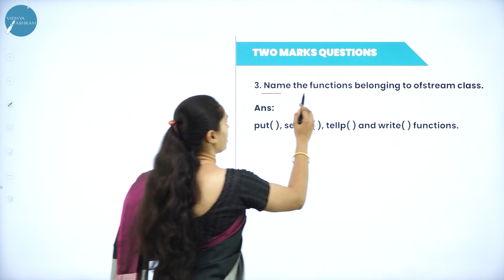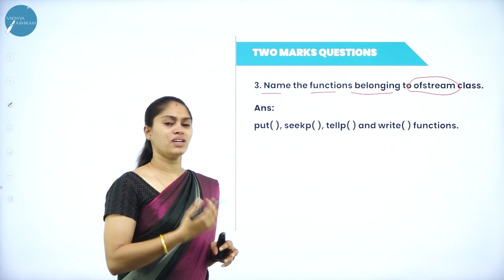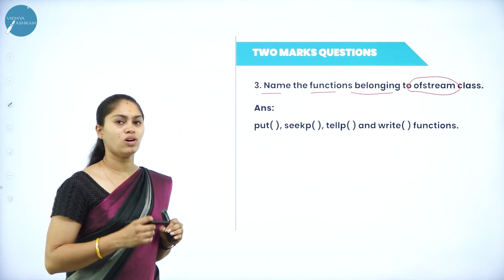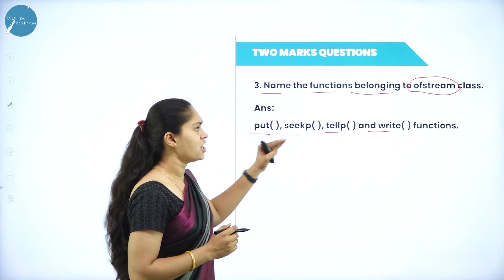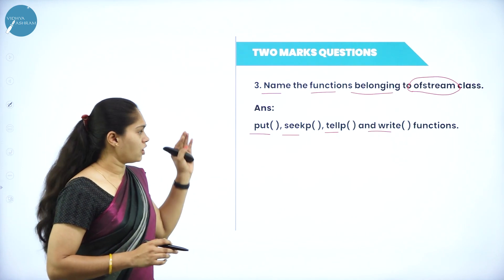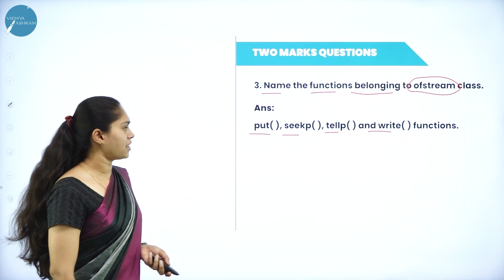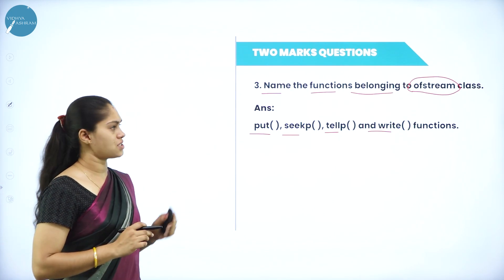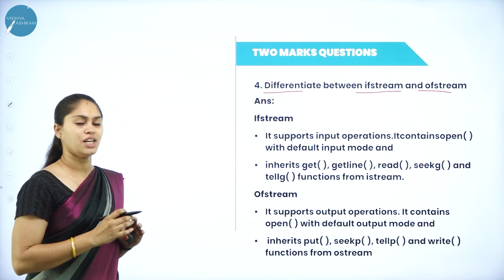The next question: name the functions that belong to the ofstream class. ofstream stands for output file stream. The member functions belonging to ofstream are: put, seekp, tellp, and write. Similarly, for ifstream, the functions are get, getline, read, seekg, and tellg. For fstream, all member functions of both ofstream and ifstream are included.